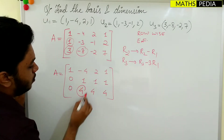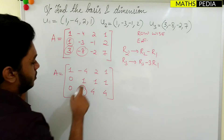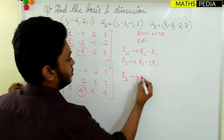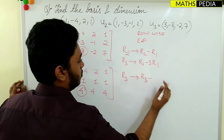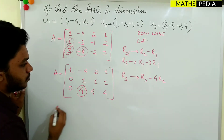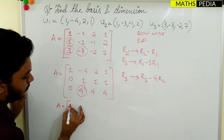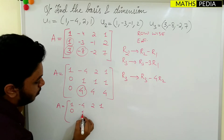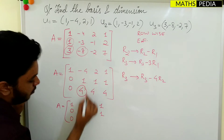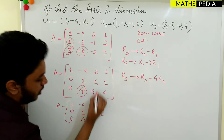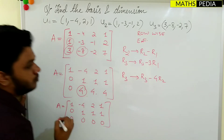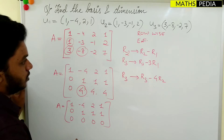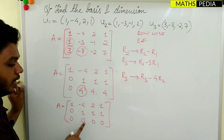Now to make the next entry zero, perform R3 = R3 - 4R2. The resulting matrix becomes: first row 1, -4, 2, 1; second row 0, 1, 1, 1; third row 0, 0, 0, 0. The matrix has now been reduced to echelon form.